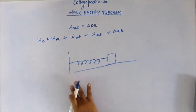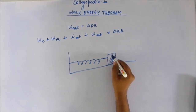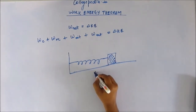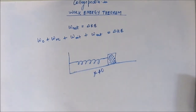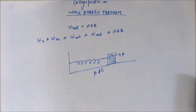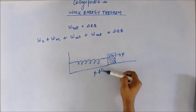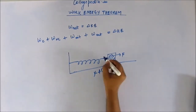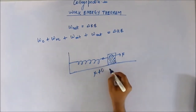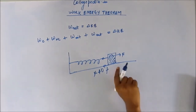We have a spring-block system where mu is not zero — there is friction present on the ground. To pull the block, we must apply a force F. This force F has to do two things: first, overcome the spring force, and second, overcome the friction force, because both the spring force and the frictional force oppose the motion of the block towards the right.